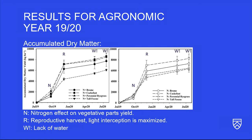These are the results for the agronomic year 2019/2020. The graph shows the accumulated dry matter, and for the harvest that occurred by October 2019 we can see a huge nitrogen effect when water was available in the system. The harvest marked with the letter R indicates we allowed plants to reach very advanced reproductive stages with seed heads.